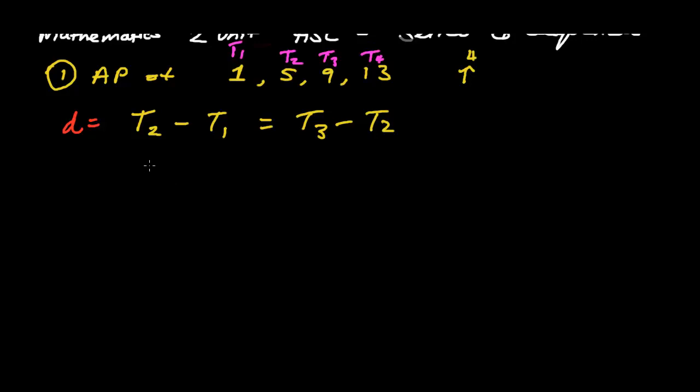We can use term 2 minus term 1, which is 5 minus 1, as well as term 3 minus term 2, which is 13 minus 9. Now as we can see, 5 minus 1 equals 4, and so does 13 minus 9 equals 4. So we can confirm that the distance of this AP is 4.